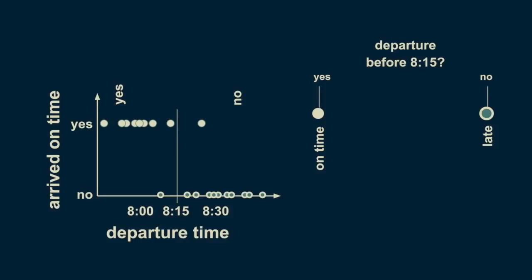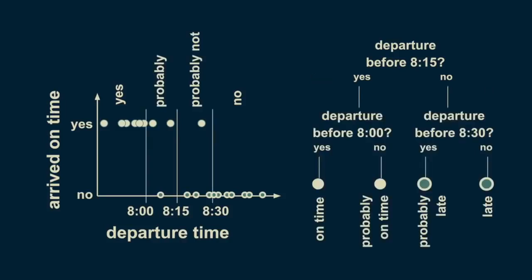This is the simplest decision tree possible — a single branch. We can refine our estimate of punctuality by subdividing both the before 8:15 and after 8:15 branches. Adding decision boundaries at 8 o'clock and 8:30 divides our arrival estimate more fully. Those before 8 o'clock are confidently on time, those between 8 and 8:15 are probably on time, and those before 8:30 still have a small chance of being on time. This decision tree has two levels, and trees can have as many levels as you want.